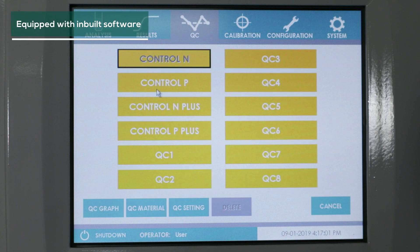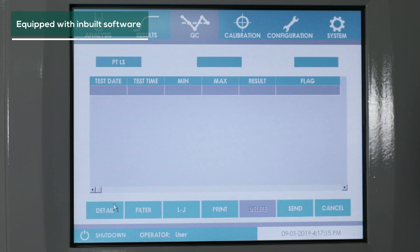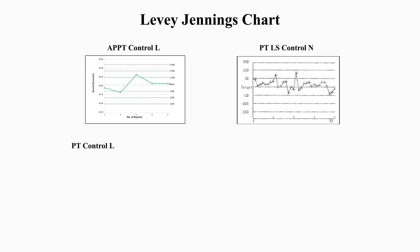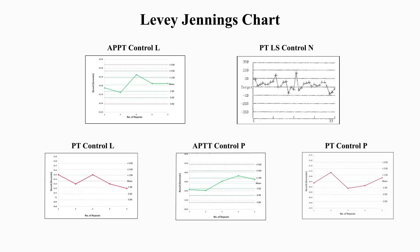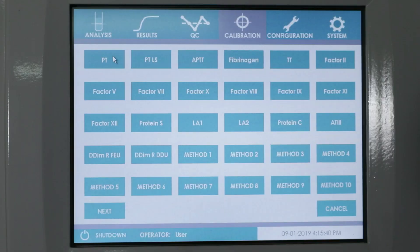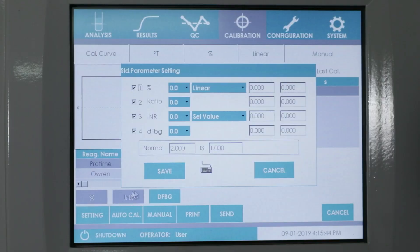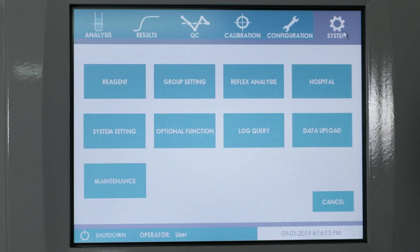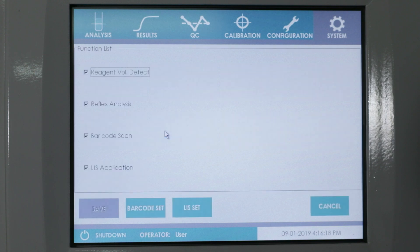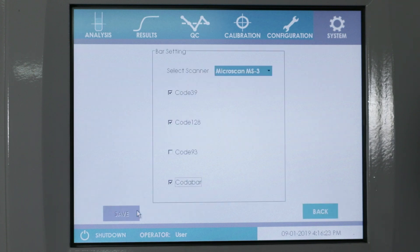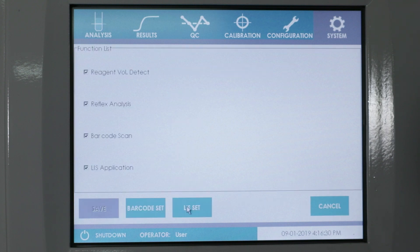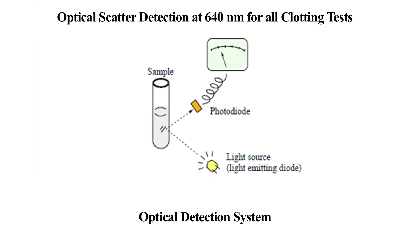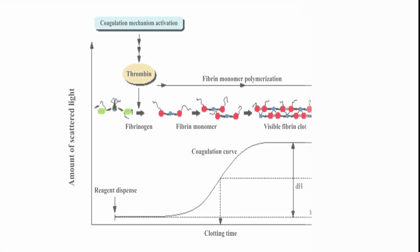Equipped with inbuilt software to manage various details about patient, barcode, test selection, test, repeat, retest, reflex testing, and results. Runtime clot curve plotting makes it completely automated. Percentage change in light scattering helps in plotting detailed clotting curves to help the user know and interpret the result better.